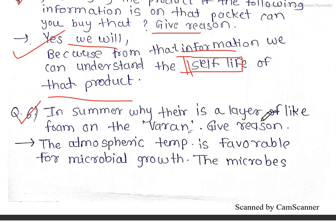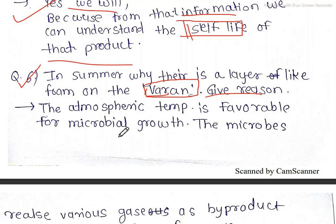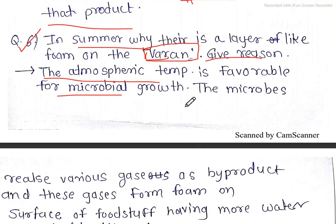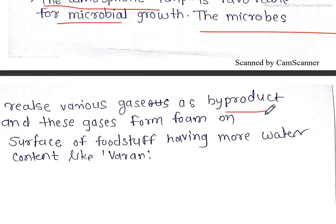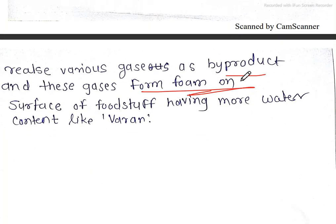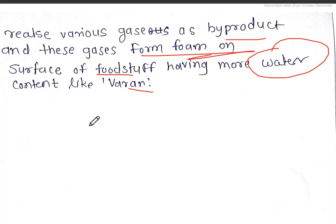Question number six: in summer, why is there a layer like foam on the varan? The atmospheric pressure and temperature are favorable to microbial growth. The microbes release various gases as by-products. When the gas is formed, it forms on the surface of a food substance like varan, which has more water content.